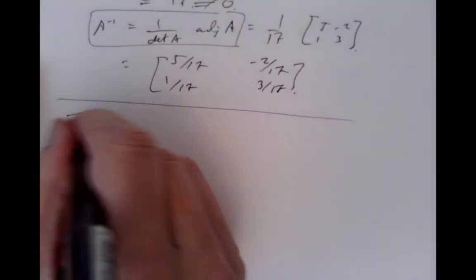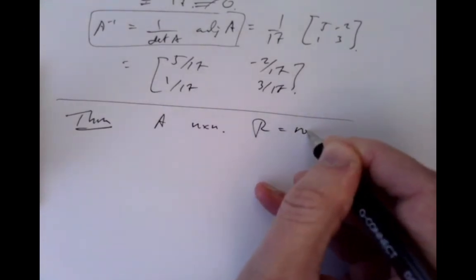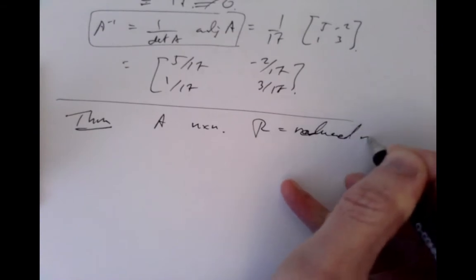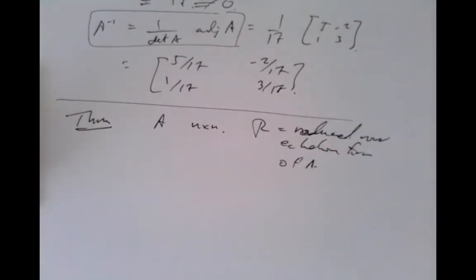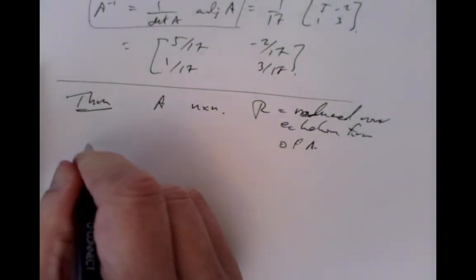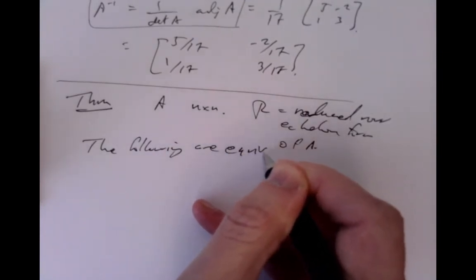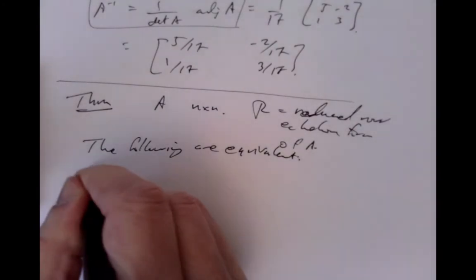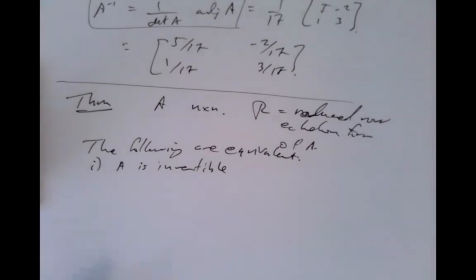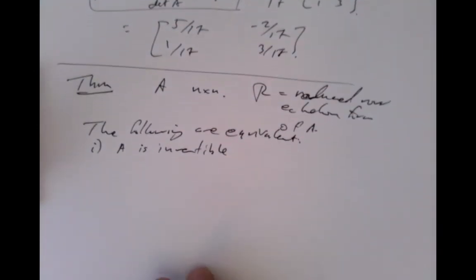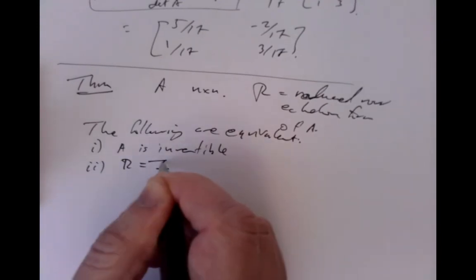Let's think about an approach that works more generally. We'll state a theorem: suppose A is an n×n matrix and R is the reduced row echelon form of A. Then the following statements are all equivalent — meaning any one is true if and only if all the others are true. First: A is invertible. Second: R is the n×n identity matrix.